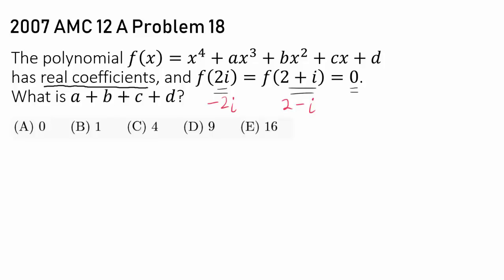We wish to find a plus b plus c plus d. Now since we know all four of the roots—2i, negative 2i, 2 plus i, 2 minus i—you may say, if you're adventurous, you can use Vieta's formula.